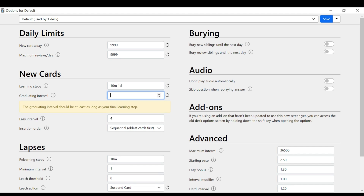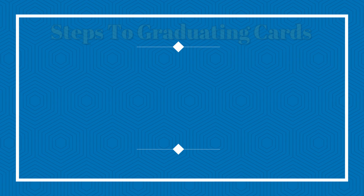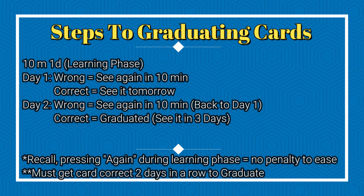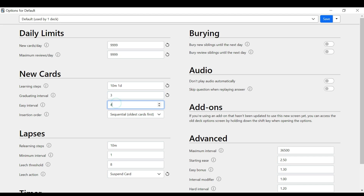Set the graduating interval to 3. That just means that after my two learning steps — meaning I have to get a card correct two days in a row before it graduates — I know if I get a card right two days in a row I'm ready to graduate it, and when I graduate it I'll see it again in three days. Keep the easy interval at 4 — no reason to change that.